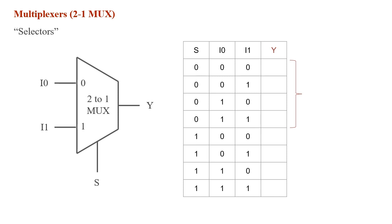A multiplexer is a selector that allows you to select one of the input options to be outputted. For a 2-to-1 mux, you have two options to choose from at the input. In this example we have i0 as our first option and i1, and based on the value of what's called a select bit — s — we're going to choose to output either i0 or i1.